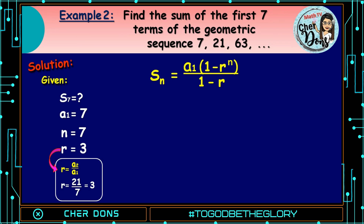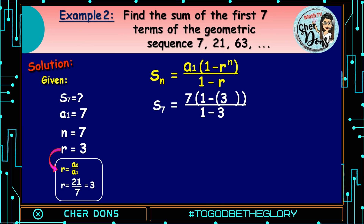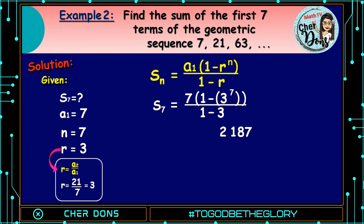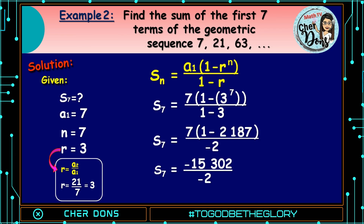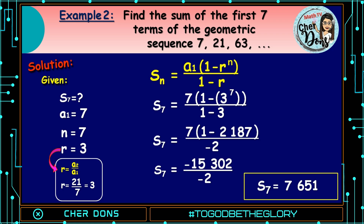Applying the formula, S of n is equal to a sub 1 multiplied by 1 minus r raised to n, all over 1 minus r. Where 7 goes to a sub 1, 7 goes to n, and 3 goes to r. We have S of 7 is equal to 7 multiplied by 1 minus 3 raised to 7, and that is equal to 2,187, all over 1 minus 3. S of 7 is equal to 7 multiplied by 1 minus 2,187 over negative 2. Calculating the value, S of 7 is equal to negative 15,302 divided by negative 2, it is equal to 7,651. Therefore, the sum of the first 7 terms is 7,651.